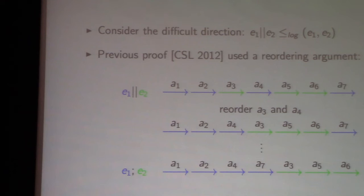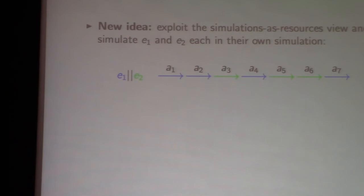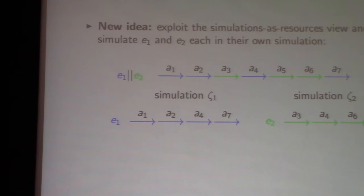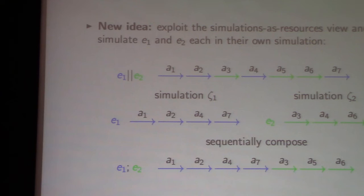Instead, the idea is to exploit the notion of simulations as resources further: why have just one global simulation when you can have multiple simulations, and even let some of them share state under certain conditions? With the same execution as before, we simply create two simulations: the steps e1 takes get simulated in one simulation, and the steps e2 takes get simulated in the other. We cut out all the intermediate steps, and once we have these two simulations, we can sequentially compose them very easily.